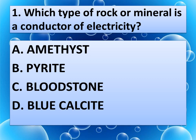Which type of rock or mineral is a conductor of electricity? Read the options very carefully. Option A: Amethyst. Option B: Pyrite. Option C: Bloodstone. Or option D: Blue Calcite. Give your answer in the comment box. And the correct answer is Pyrite.